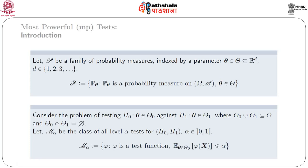For this, we consider P as a family of probability measures indexed by a parameter theta belonging to Theta, which is a subset of R to the power d, where d belongs to the set of positive integers 1 to infinity. That means, script P is equal to the class of those P_theta satisfying: P_theta is a probability measure on (Omega, A) and theta belongs to Theta.